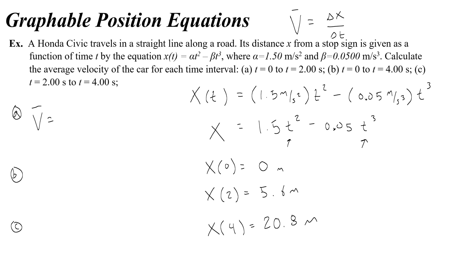And for my interval of 0 to 2 seconds, I would do x of 2 minus x of 0. Which would be 5.6 minus 0. And then over 2 seconds minus 0 seconds, which is really just 5.6 divided by 2. And that gives you 2.8 meters per second.